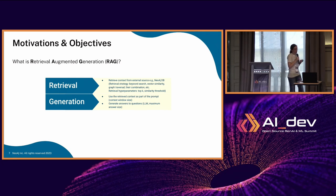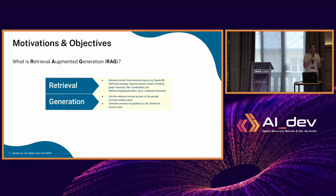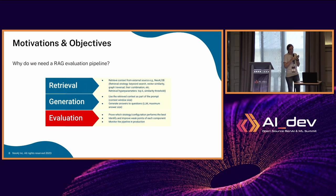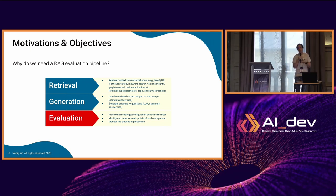In a RAG pipeline we have two basic steps. One is the retriever, where you define a strategy about how to find the relevant context for the user question. The second part is the generation — you give the context to the LLM and the LLM generates the human-readable answer. And the part we often forget about is the evaluation part: how do you know that the answer you're providing is actually relevant to the question and true based on the context? This is mostly what we will talk about today.